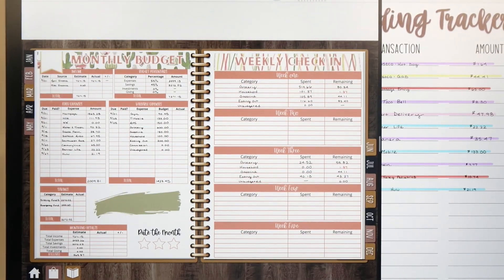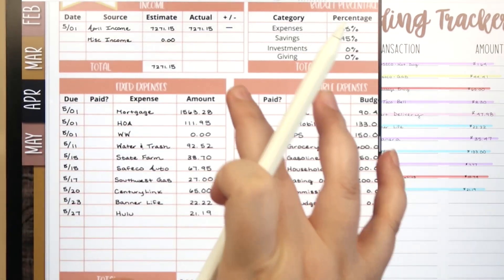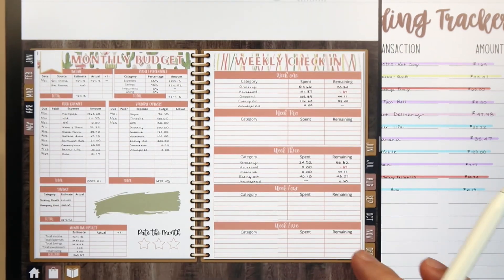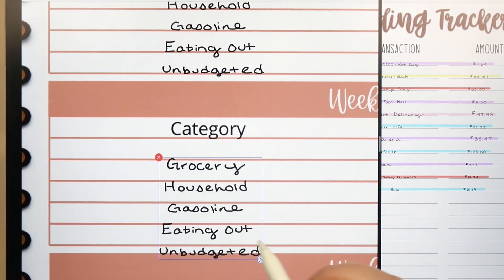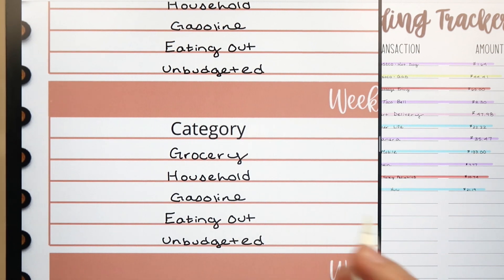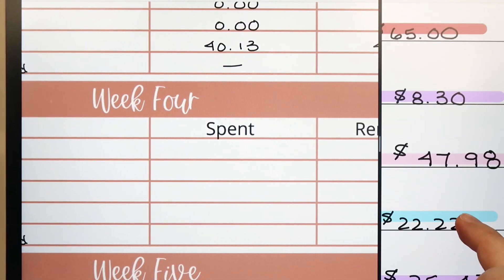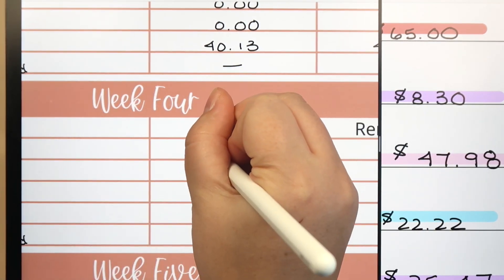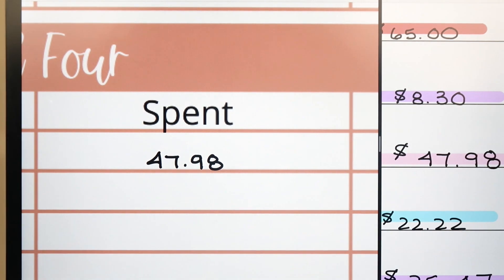The next thing is to track our variable expenses on the weekly check-in page. I put the weekly check-in page next to the monthly budget so I can see what we budgeted in total for each category. For grocery — that's pink — we did a Walmart grocery delivery, which has a pretty heavy fee, so I don't know that we'll be doing that again. But it was worth it for the convenience because that day things were just kind of chaotic.